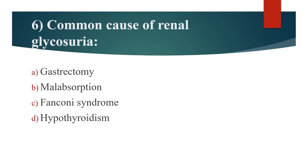Sixth question: Common cause of renal glycosuria? Option A: Gastrectomy. Option B: Malabsorption. Option C: Fanconi syndrome. Option D: Hypothyroidism. Answer is Option C: Fanconi syndrome.